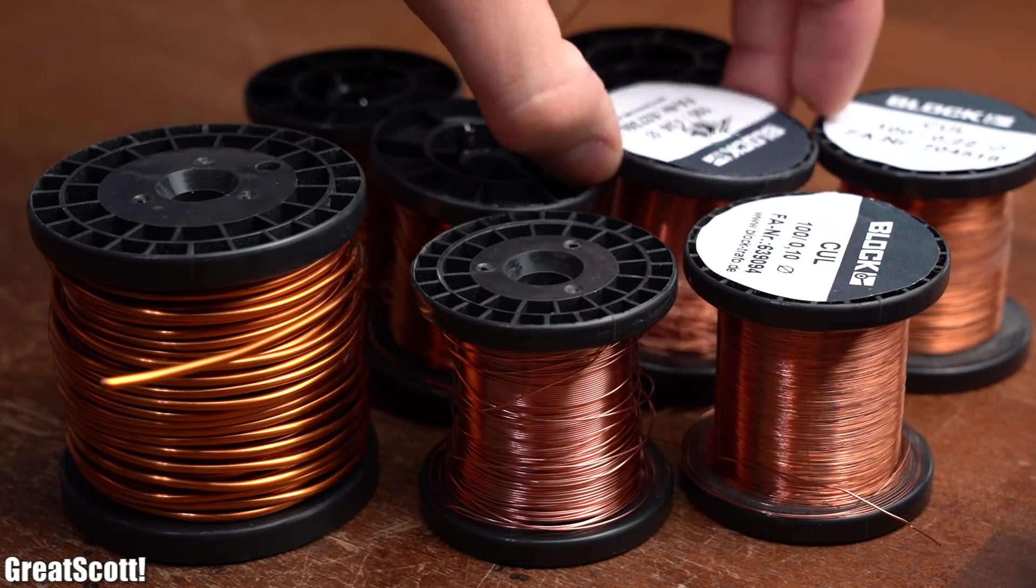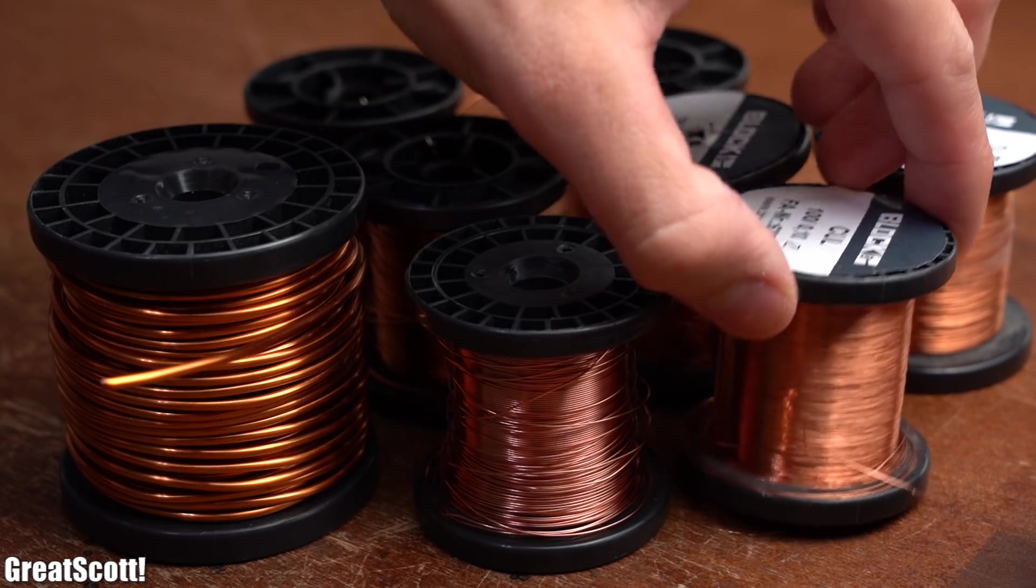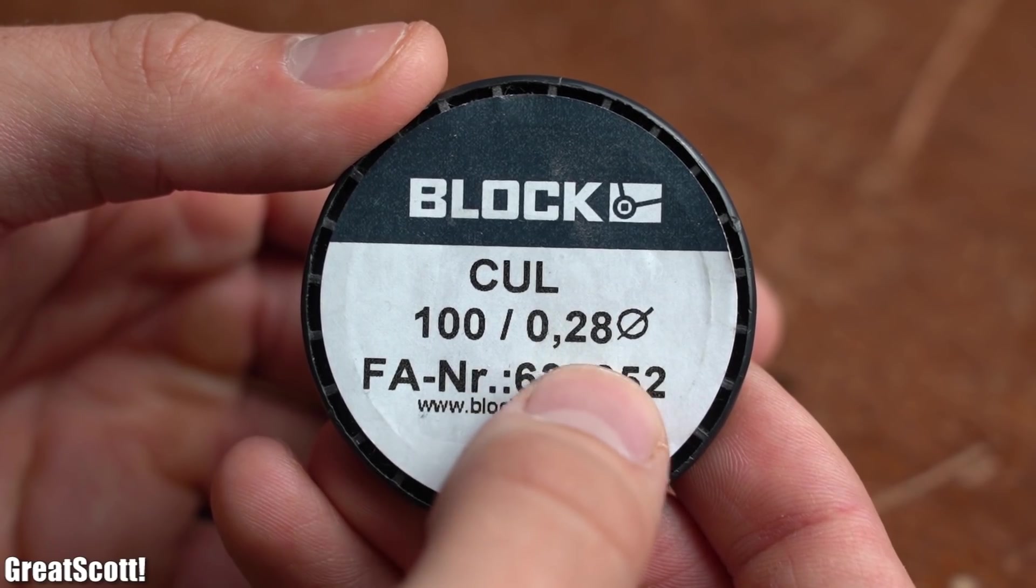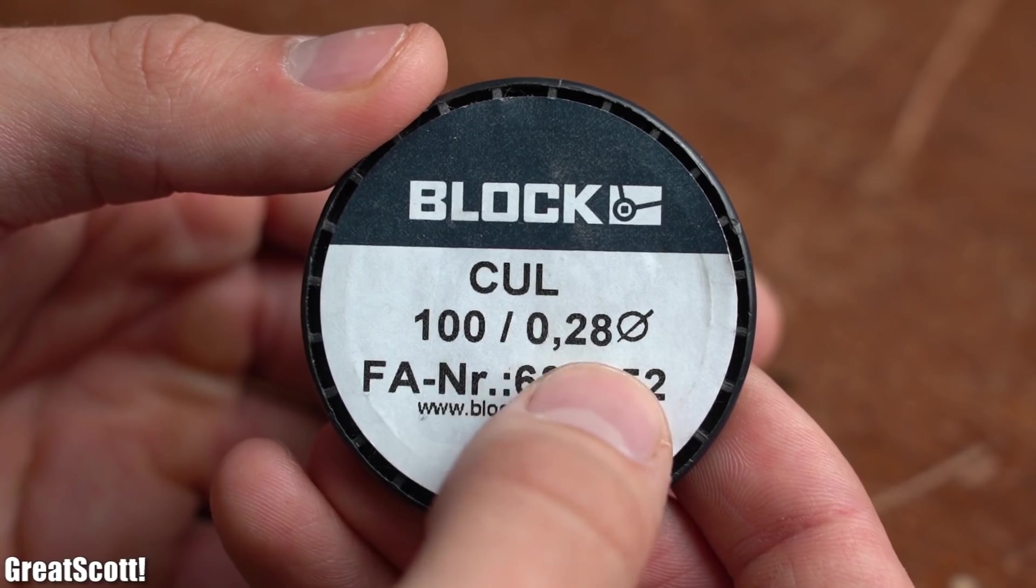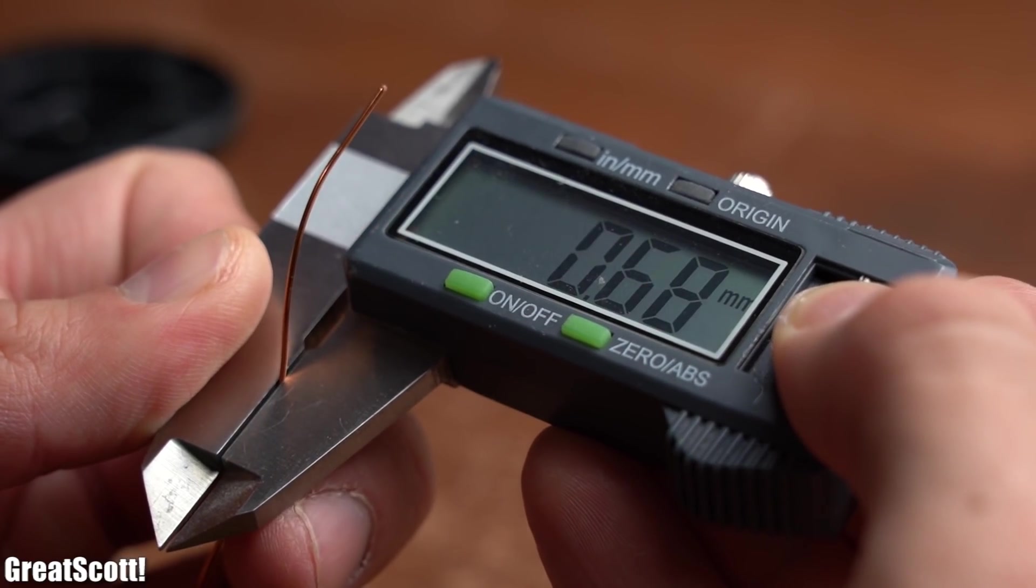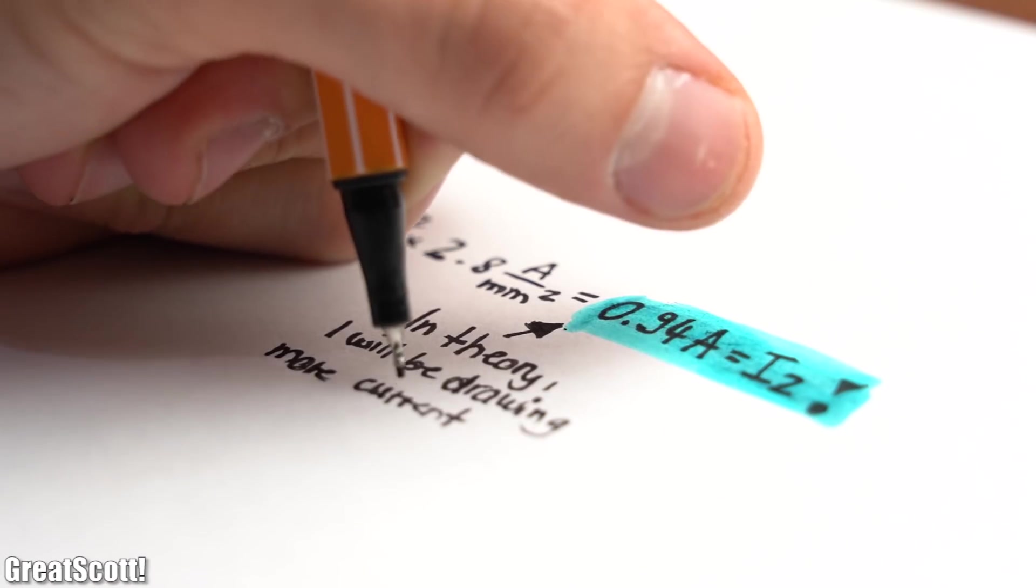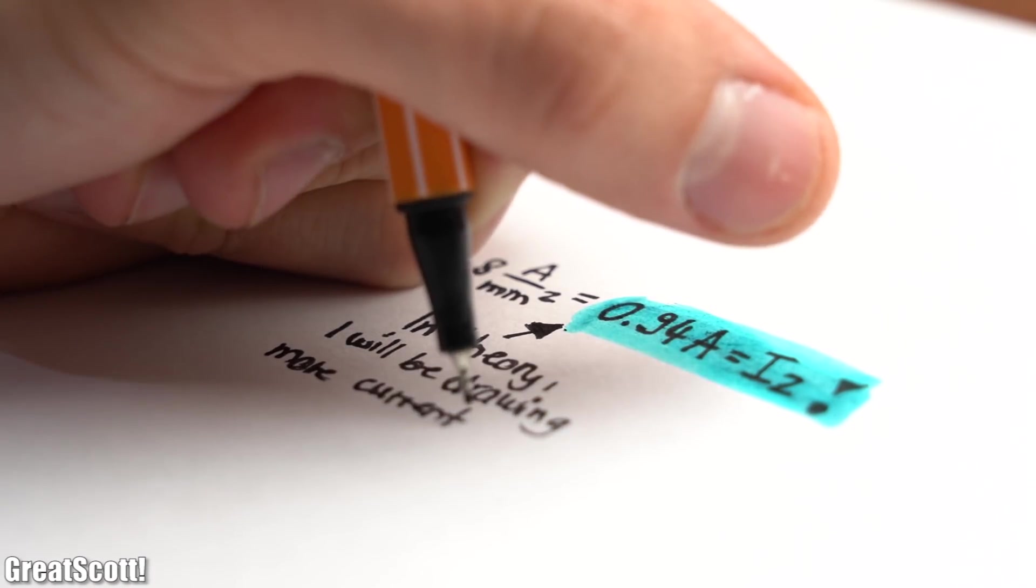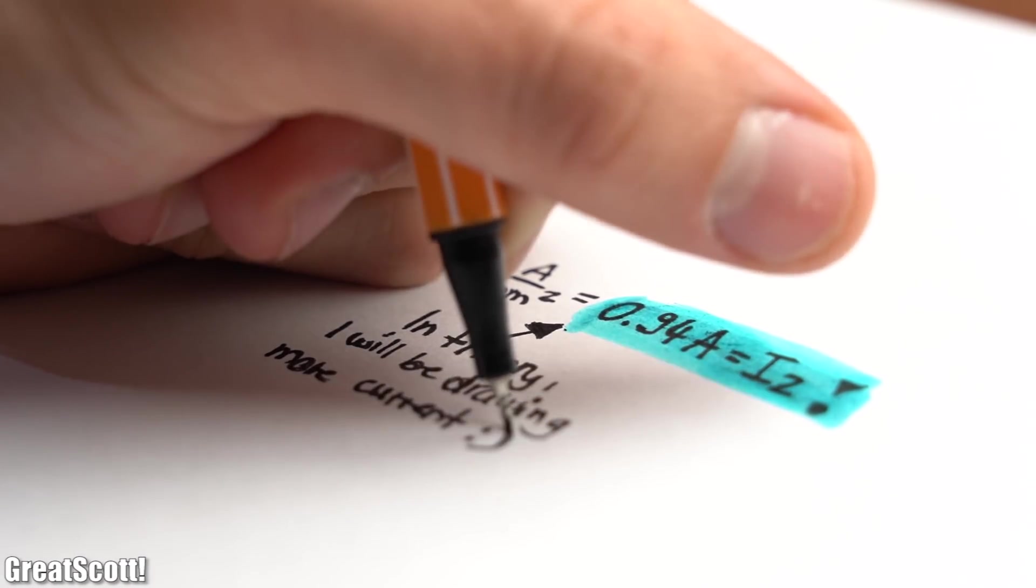The only problem was that I did not have the required copper wire, and thus I had to undersize a tiny bit for the primary side and quite a lot for the secondary side, which means we cannot draw the maximum amount of power the transformer core could handle.